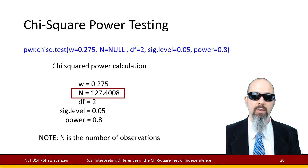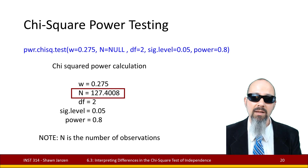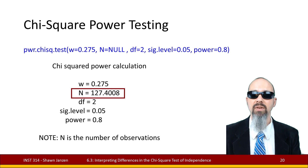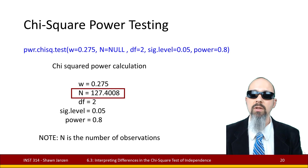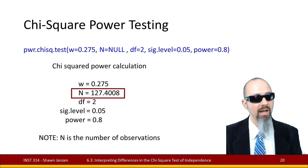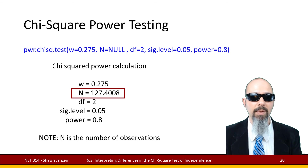That concludes our video set on the chi-square test of independence, with the other two videos doing the walkthrough in Excel and R. I'll see you in the next topic module.